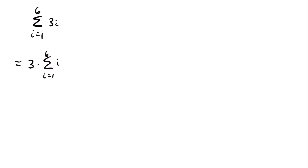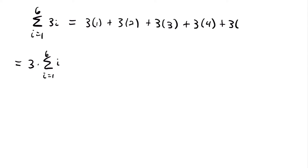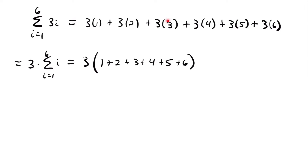Now we can multiply that 3 by the value of this summation. Previously, this would have been 3 times 1 plus 3 times 2 plus 3 times 3 plus 3 times 4 plus 3 times 5 plus 3 times 6. But pulling out that 3, this simplifies to 3 times the quantity 1 plus 2 plus 3 plus 4 plus 5 plus 6. Since we already know that sum is 21, this equals 3 times 21, which is 63. You can pull out any constant multiplied by your term i.